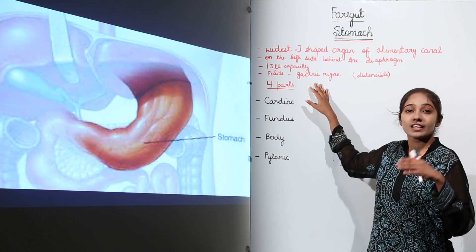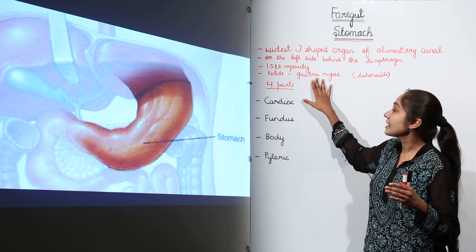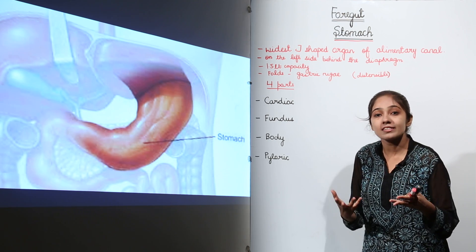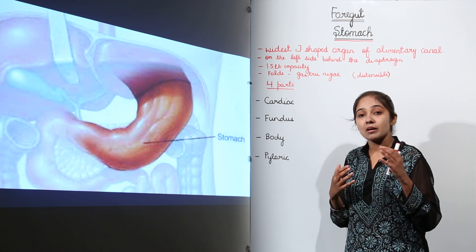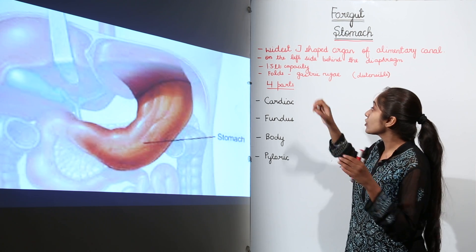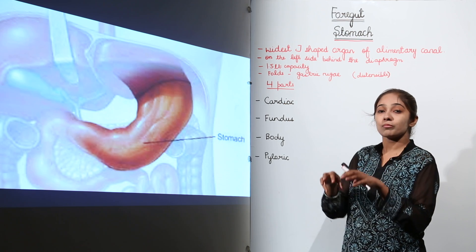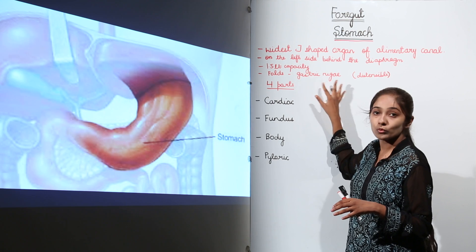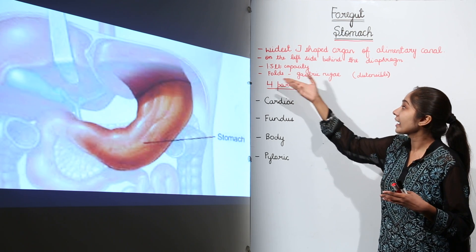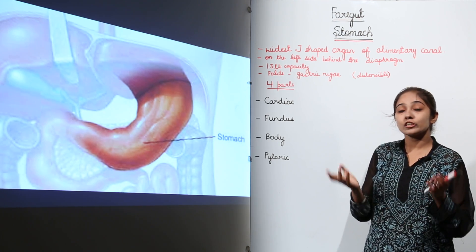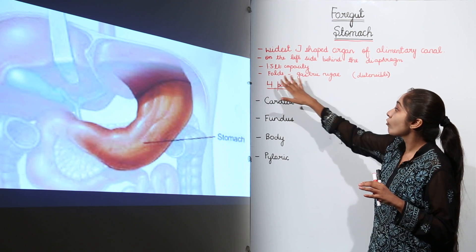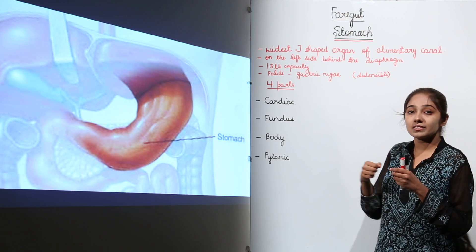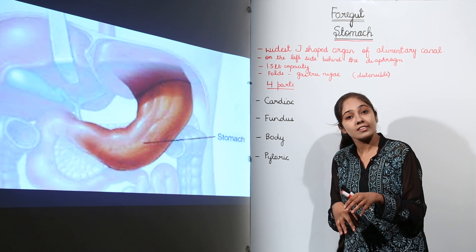When the stomach is empty, there are folds which we call gastric rugae. Whenever we eat something and the stomach is full, the stomach can be stretched because of these folds, and more and more food can be accommodated because of the presence of the gastric rugae.